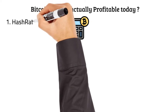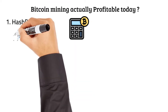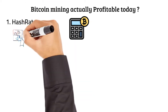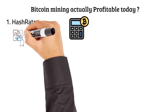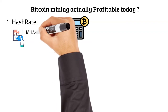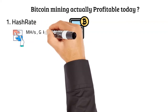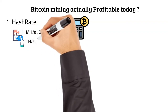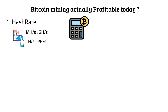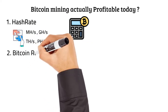Number 1: Hash rate. A hash is the mathematical problem miners' computers need to solve. The hash rate refers to your miner's performance, or how many guesses your computer can make per second. Hash rate can be measured in megahash per second, gigahash per second, terahash per second, and even petahash per second.